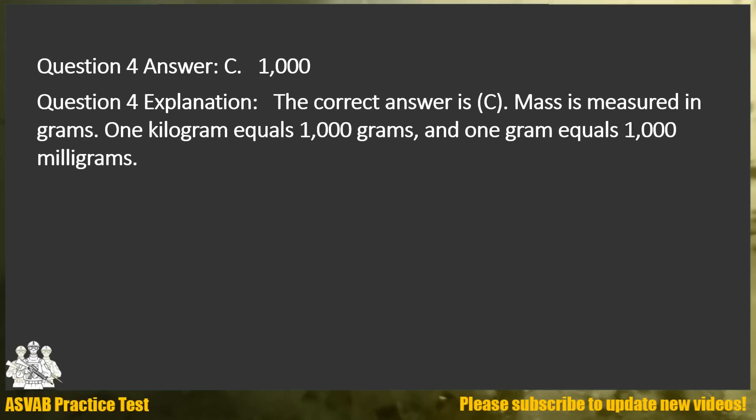Answer: C. 1,000. Explanation: The correct answer is C. Mass is measured in grams. 1 kilogram equals 1,000 grams, and 1 gram equals 1,000 milligrams.